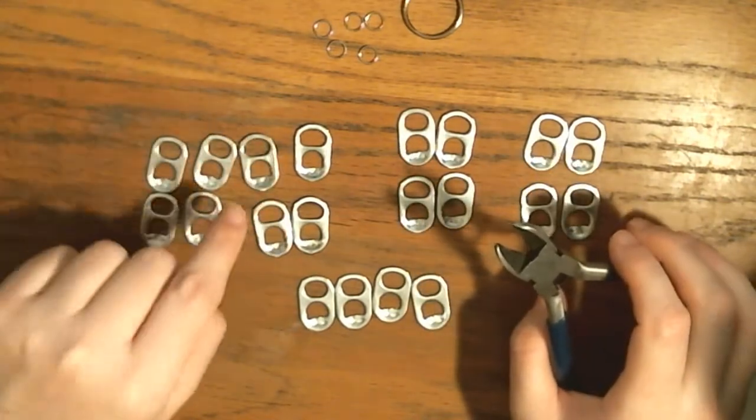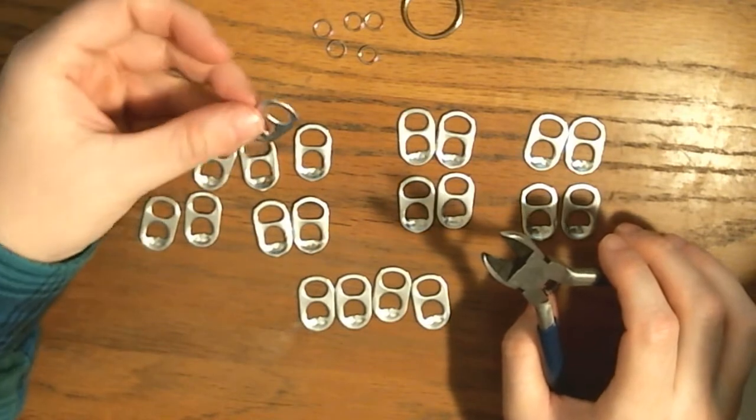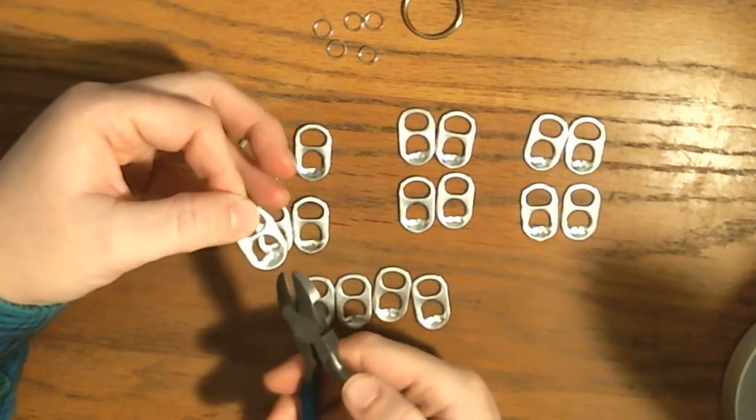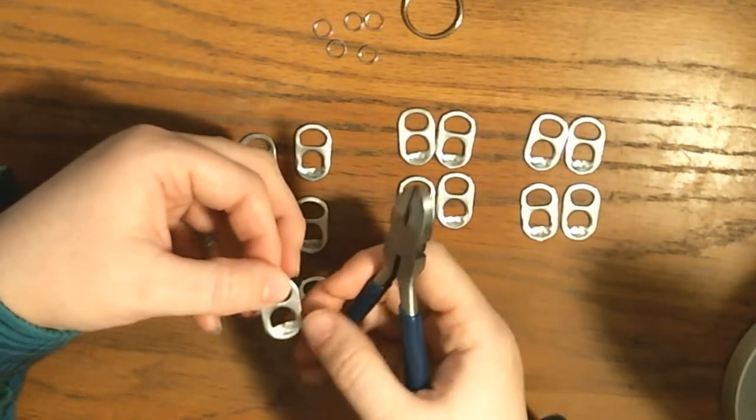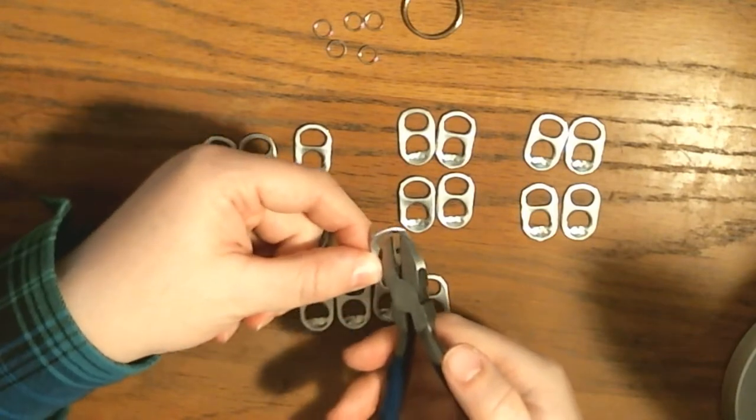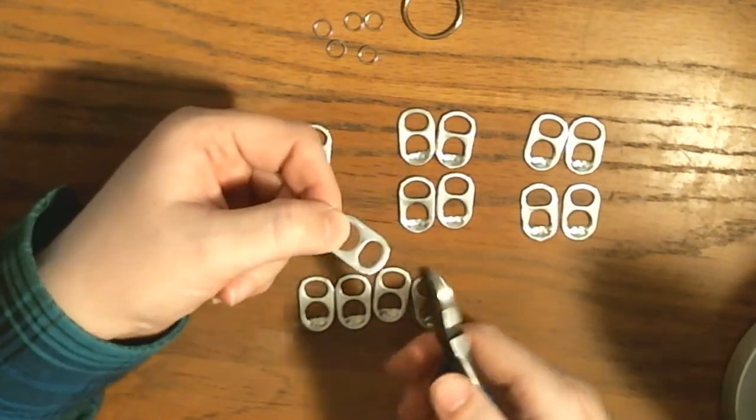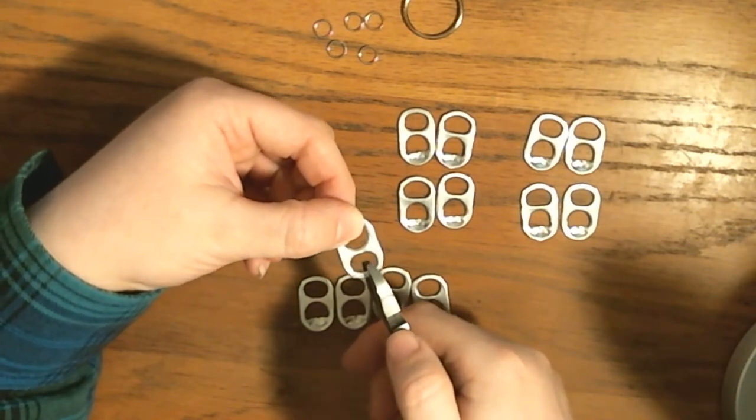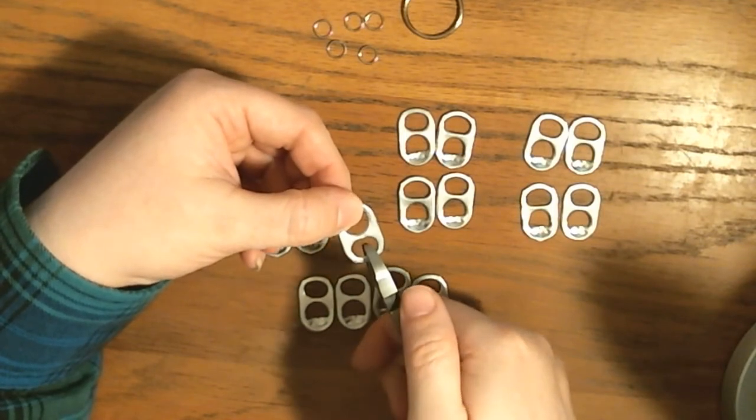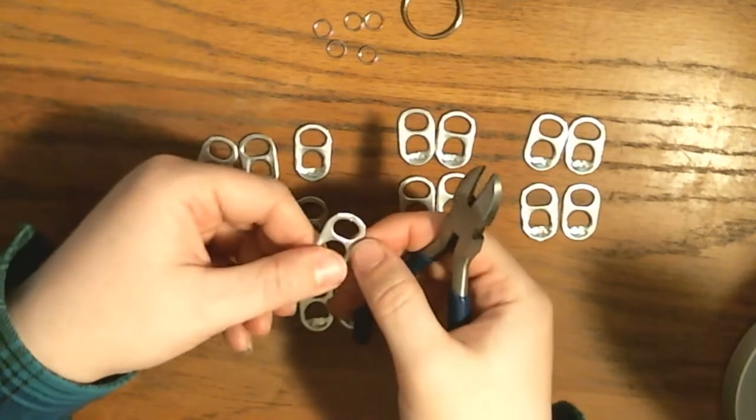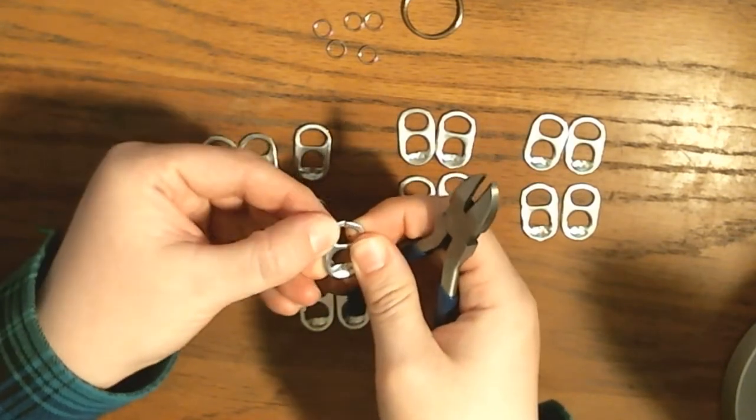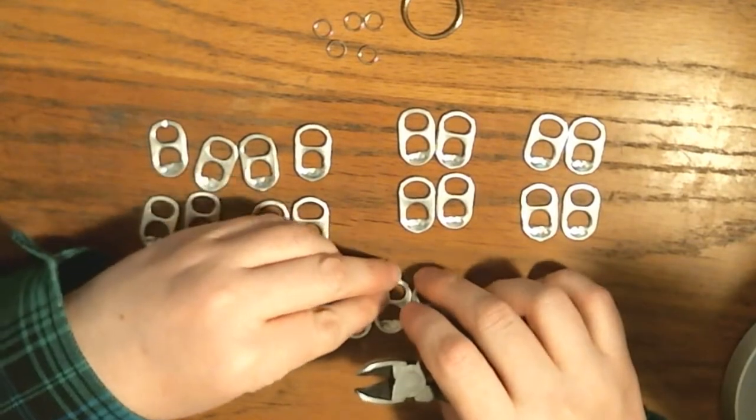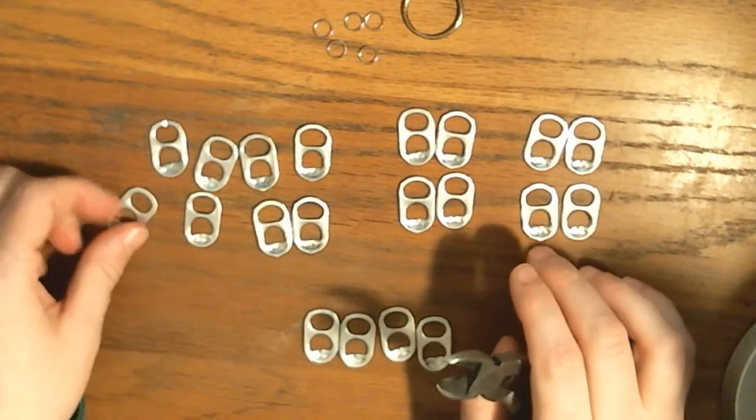Okay. The first thing we have to do is we have to cut the tops of almost all of our pop tabs so that we can create the chain links. And so we are not going to cut the bottom part. There's no need to cut the bottom part. We're only going to cut up here, up on this really small, thin part.